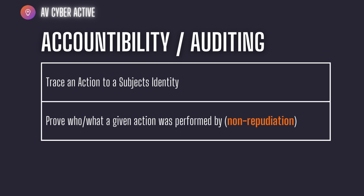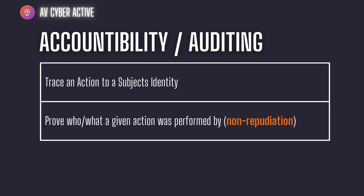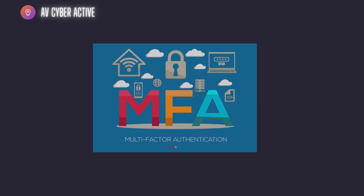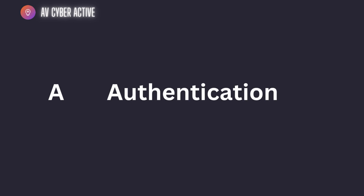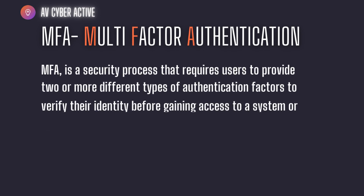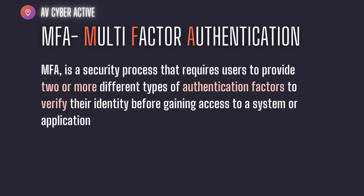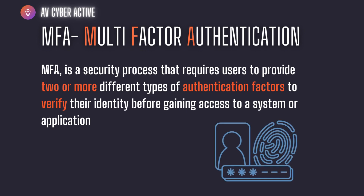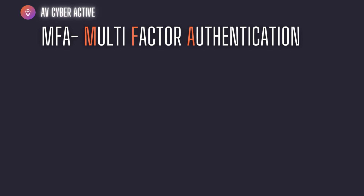If you were able to understand the concept of IAAA, you already know what MFA or multi-factor authentication is. The most important factor in IAAA was the first A — authentication. MFA is a security process that requires users to provide two or more different types of authentication factors to verify their identity before they are given full access or authorized to access a system or application. These factors typically fall into the three main categories we discussed earlier. MFA uses a combination of these three elements to authenticate.